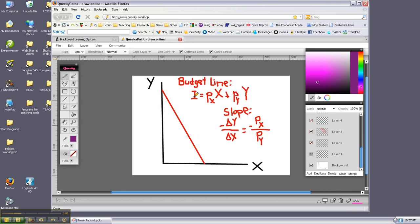It tells us that income equals the sum of the expenditures on X plus the sum of the expenditures on Y. What is the slope of the budget line? Here's our usual expression for slope, change in Y over change in X.